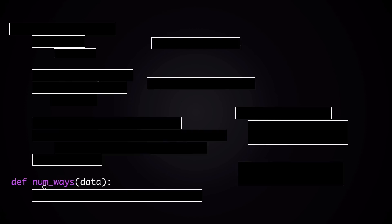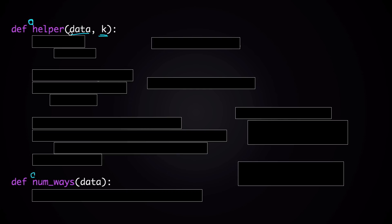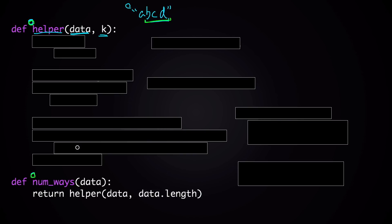Let's turn this into code. We'll call our main function num_ways(data). Instead of calling it recursively directly, we'll define a helper function. This helper takes data — the given string — and k, a non-negative integer. In the helper function, we only look at the last k letters of data. For example, if data is 'abcd' and k is 3, we look at the last three letters 'bcd'. This way we don't need to create a new string every time we call the function recursively. The helper returns the number of ways to decode the last k letters. From our main function, we just return helper(data, len(data)), which covers the full string.